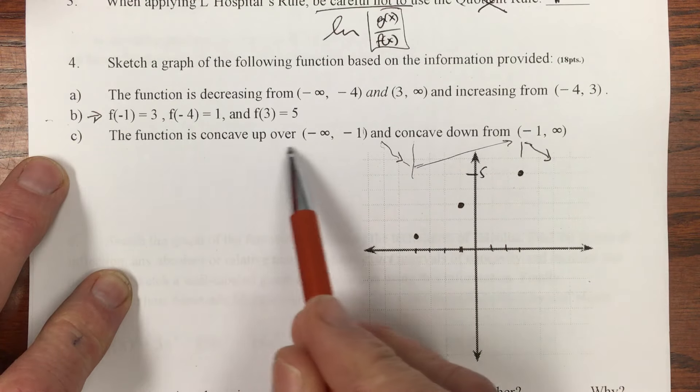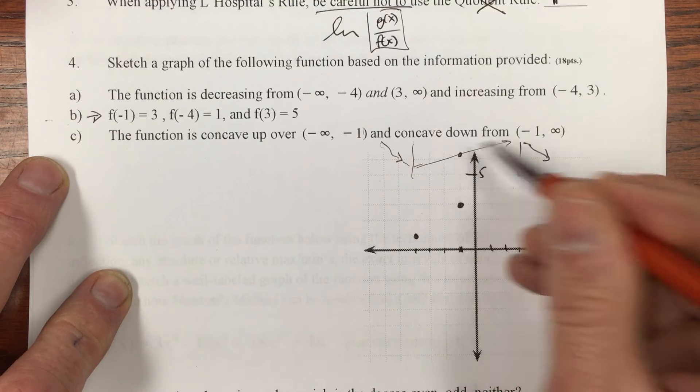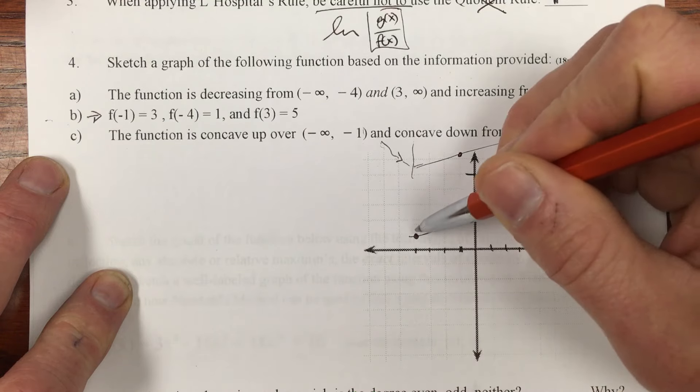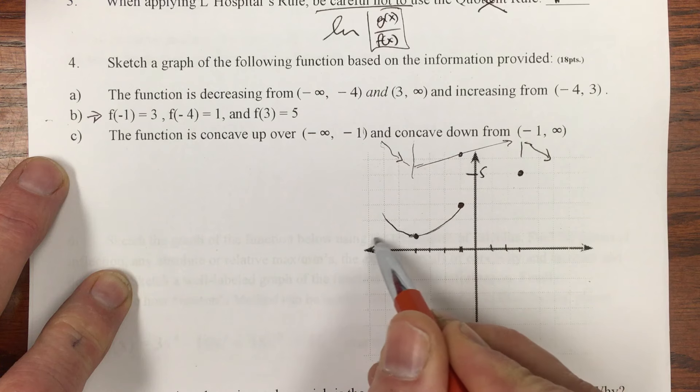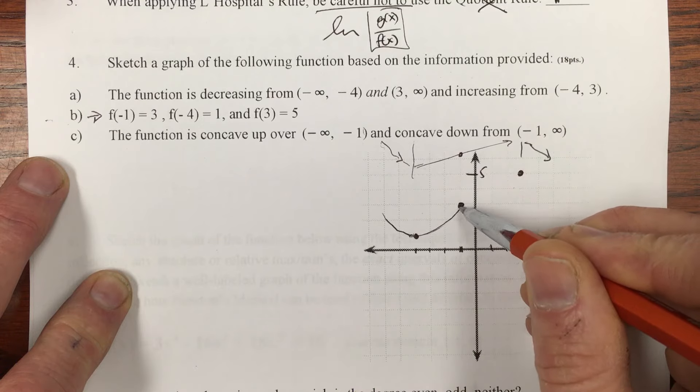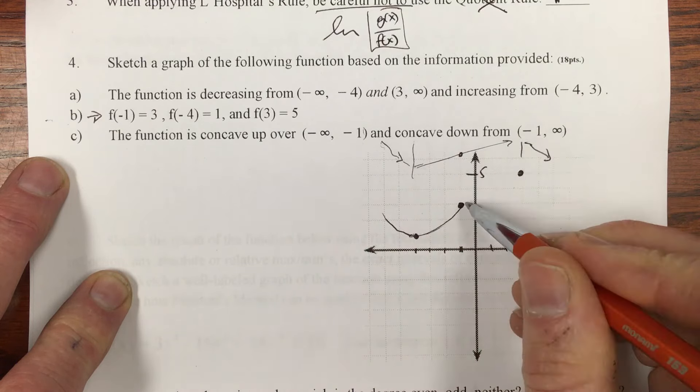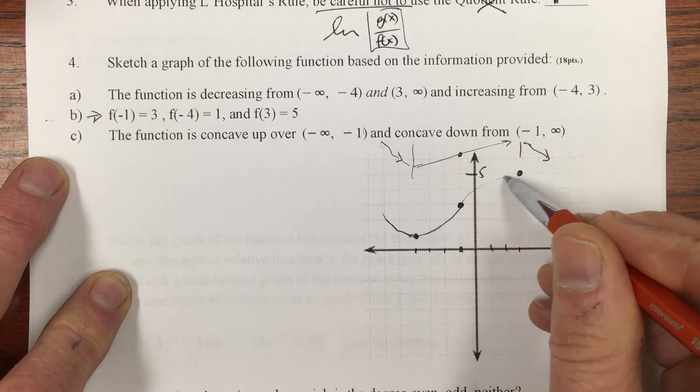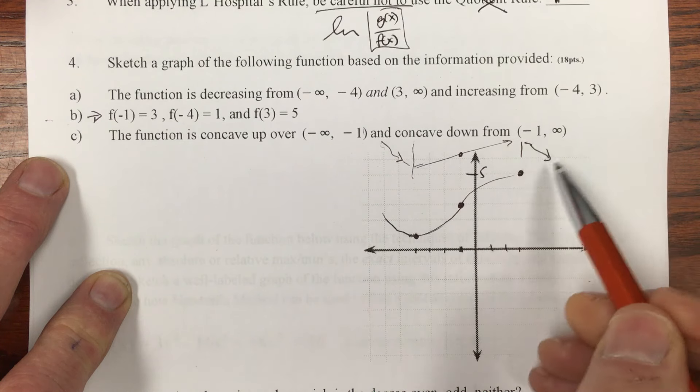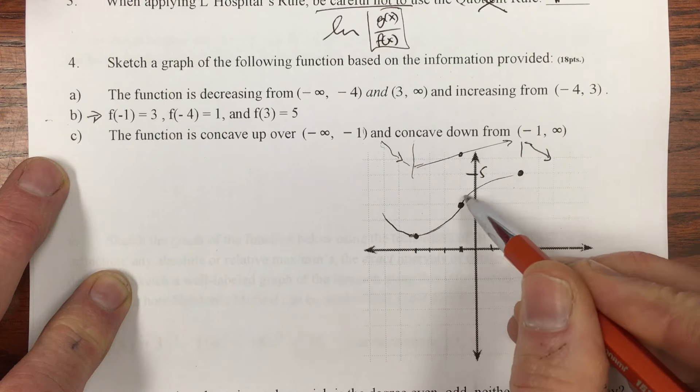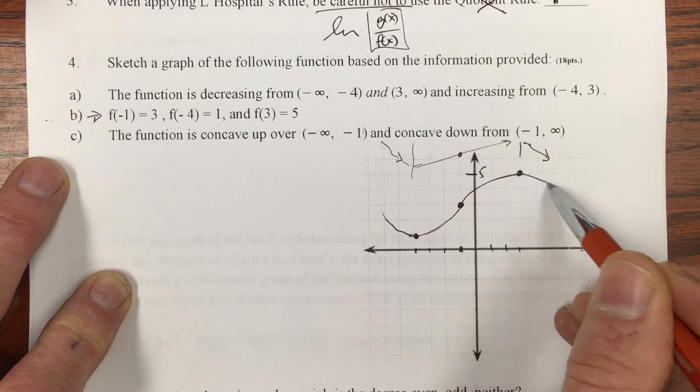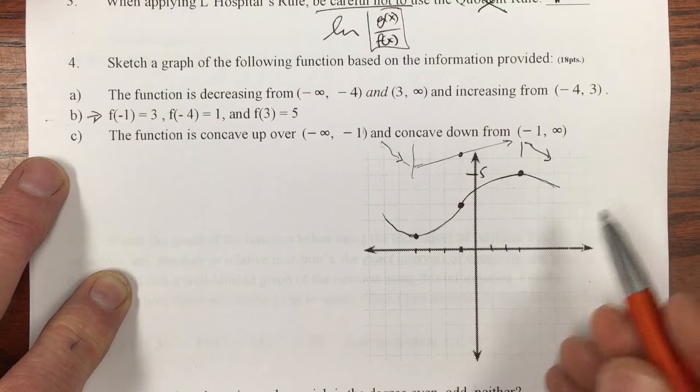The function is concave up over the interval to -1. That would make sense. If it's concave up and it's going down, it looks like it's doing something like this. And then it's concave down from -1 to infinity. So it could be going and approaching an asymptote. But it's decreasing thereafter, so we know this is a high point. It can't be flattening out. It's got to be going back down to be decreasing. That makes a lot of sense right there.